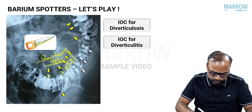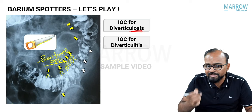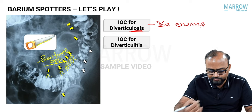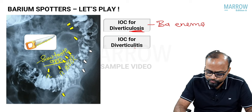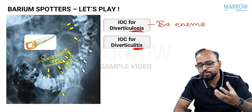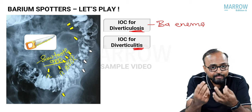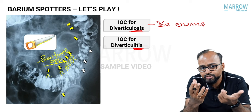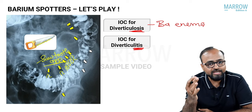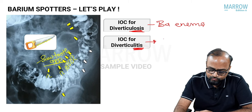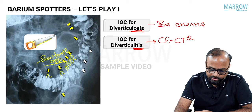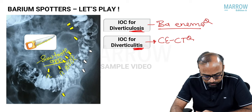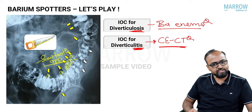The investigation of choice for diverticulosis — just the presence of diverticula — is barium enema, as multiple diverticula are clearly seen. But for diverticulitis — inflammation where a diverticulum perforates causing infection, abscess formation — barium is absolutely contraindicated because of the perforation. In such cases the investigation of choice is contrast-enhanced CT.